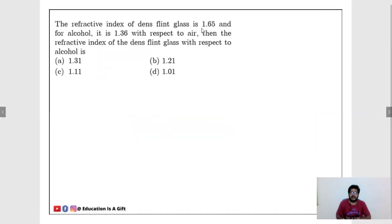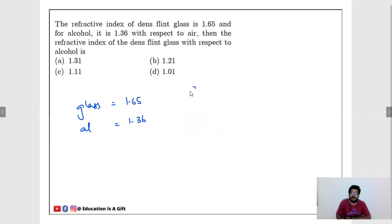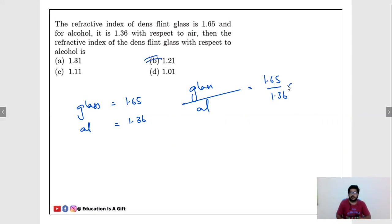The refractive index of dense flint glass is 1.65 and for alcohol it is 1.36, both with respect to air. Find the refractive index of dense flint glass with respect to alcohol. The answer is 1.65 / 1.36 ≈ 1.21.